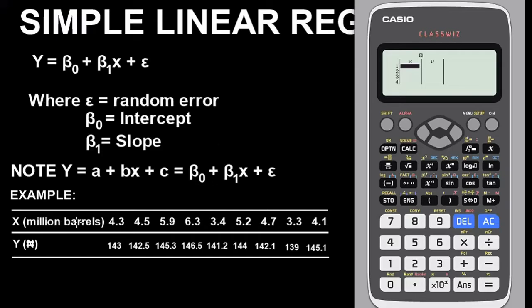Once you get here, begin to input your respective values. For X values we have 4.3, then 4.5, then 5.9, then 6.3, then 3.4, then 5.2, then 4.7, then 3.3, and lastly 4.1 for X values.